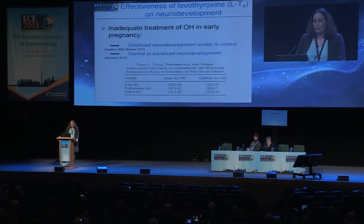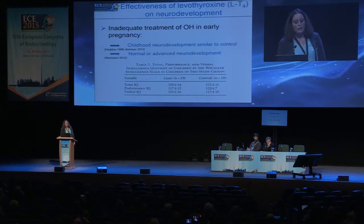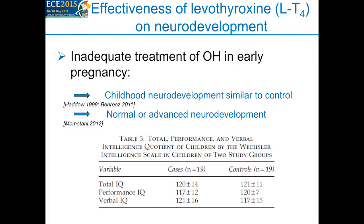Just a brief word about neurodevelopment: if overt hypothyroidism is inadequately treated in early pregnancy, studies show that childhood neurodevelopment is similar to controls. The Beirut study showed that total IQ, performance IQ, and verbal IQ were similar in adequately and inadequately treated women. A further study showed even normal or advanced neurodevelopment, although it has to be noted that this was an underpowered study.